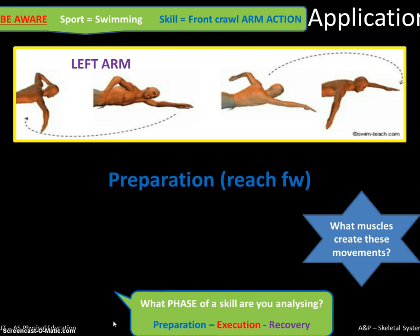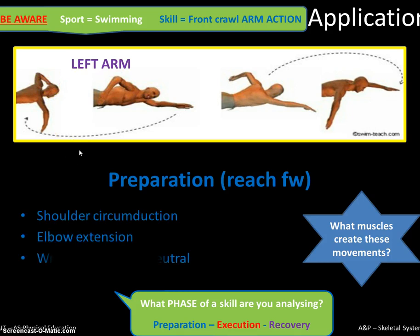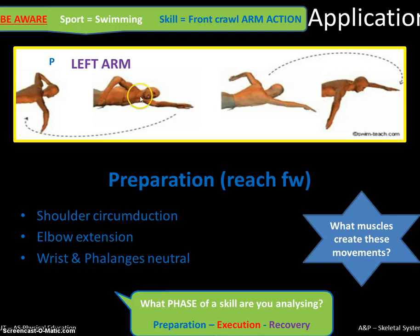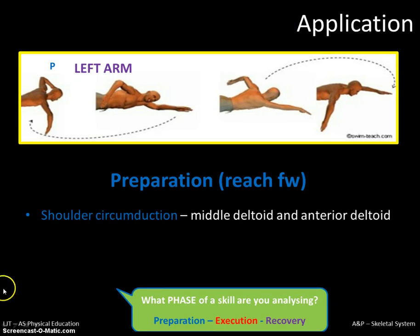We're going to look at the preparation phase: the reaching forward of the left arm. We'll look at the shoulder joint, the elbow joint, and the wrist and fingers. The movement occurring at the shoulder joint is a circular movement, which is called circumduction. From a flexed position there's a movement of extension where we straighten the arm, and the fingers and wrists — the phalanges — stay fairly neutral and constant. Those are the joints and the joint movements.